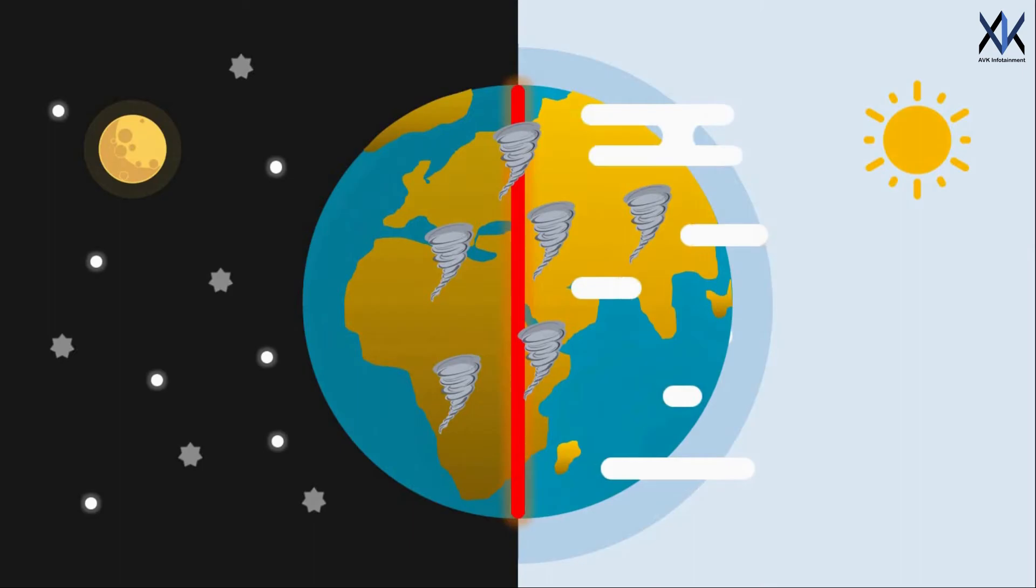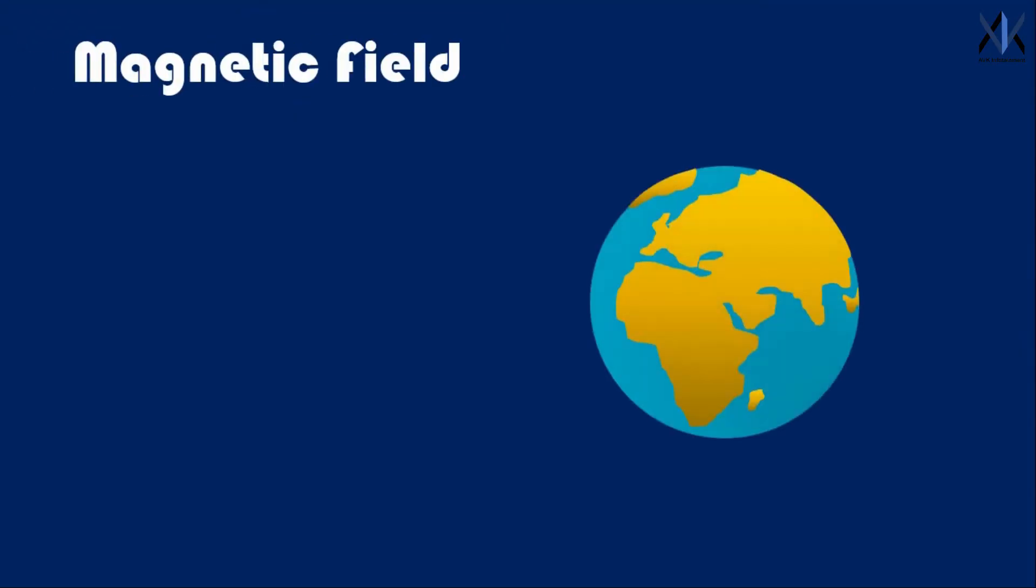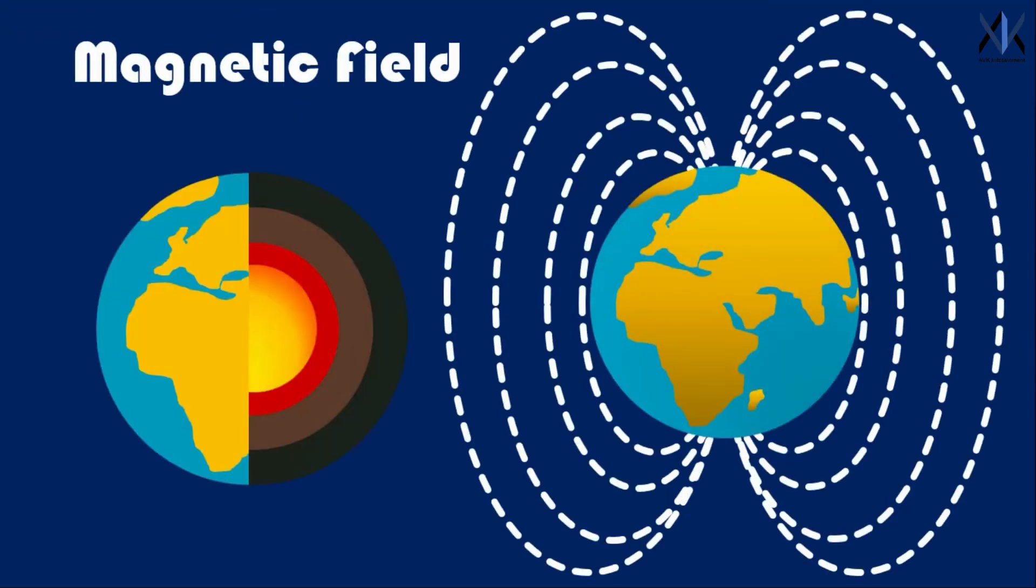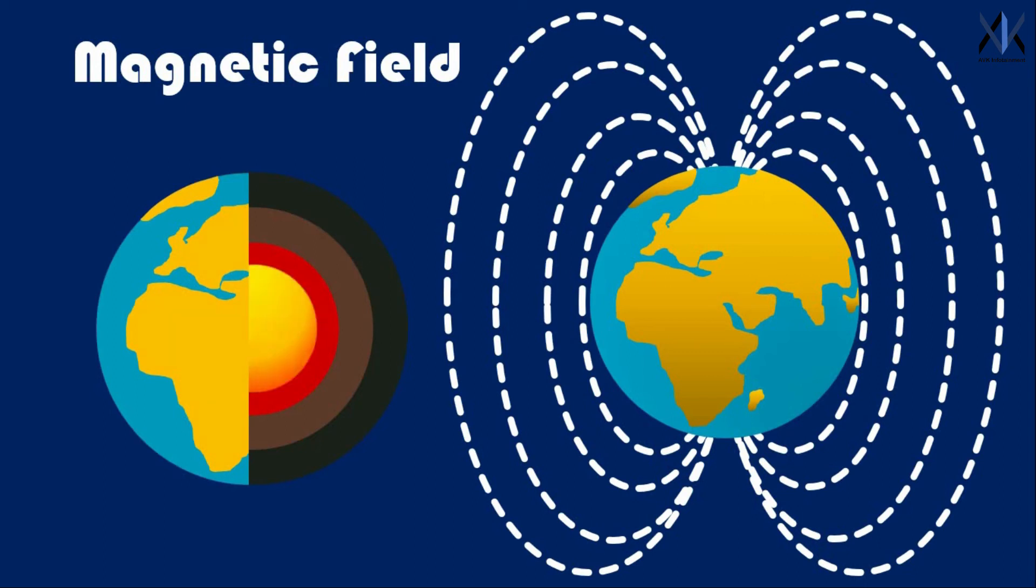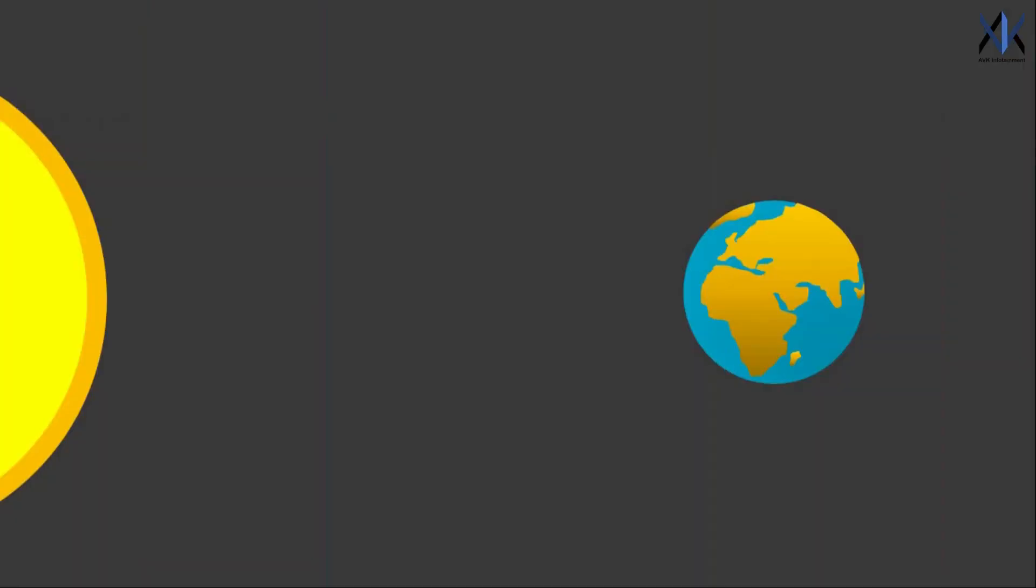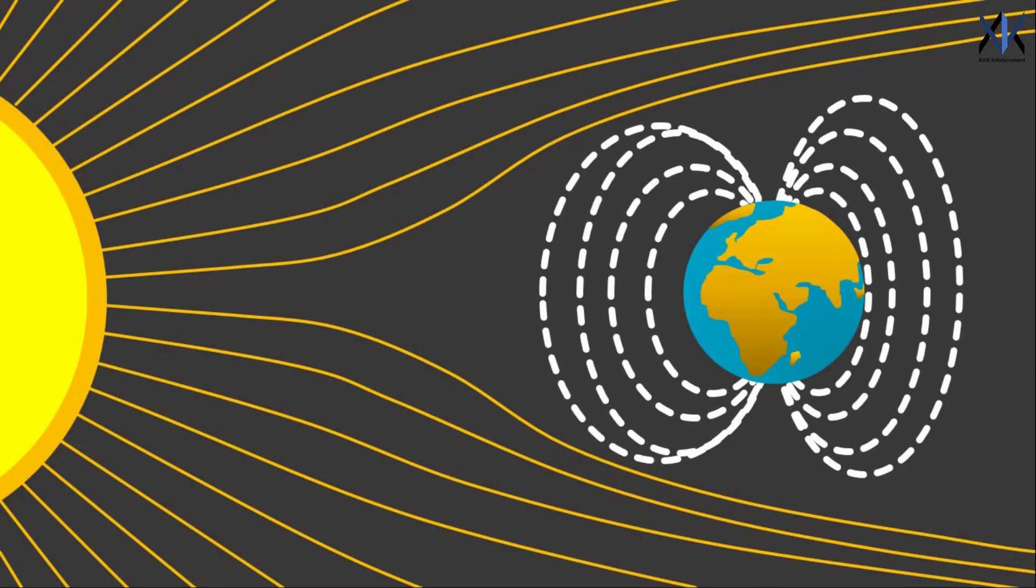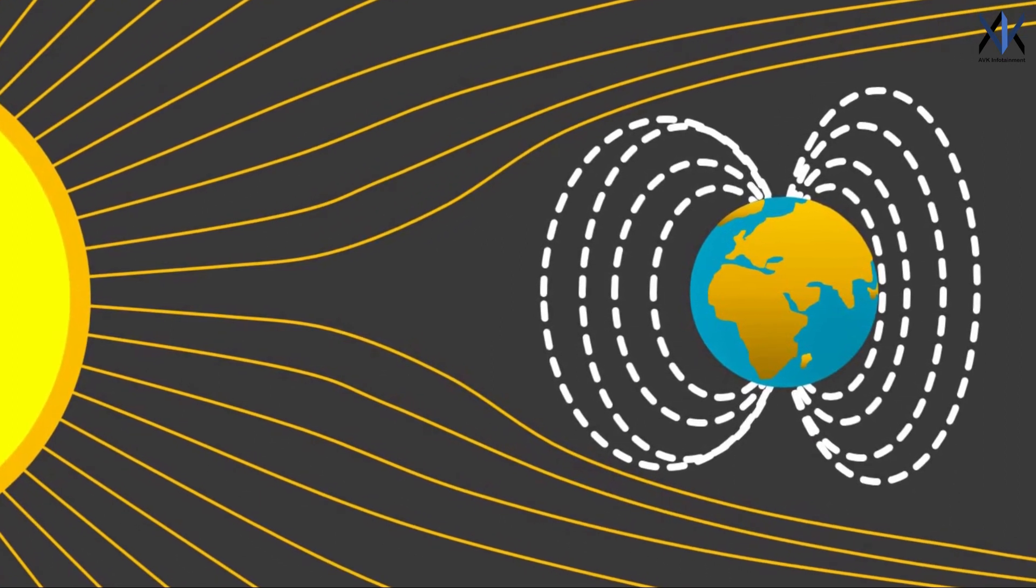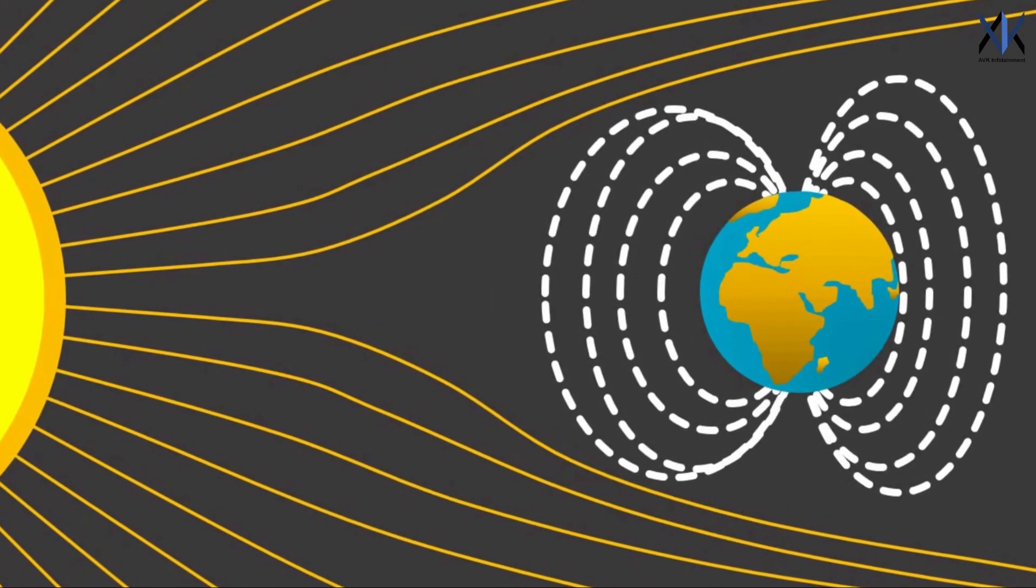The last nail in the coffin will be the disappearance of Earth's magnetic field. Earth's magnetic field is created due to a dynamo effect due to its rotation. It is the Earth's magnetic field which protects us from the harmful cosmic radiations and also the solar winds generated from the sun. With the disappearance of Earth's magnetic field, the solar winds can destroy each and every living beings on the planet.